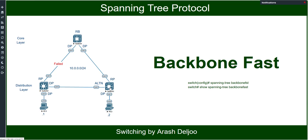However, Backbone Fast begins to determine whether other alternative paths to the root bridge exist, according to certain rules. Let me first review the previous concept you saw before, and after that I will explain the Backbone Fast feature.